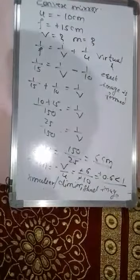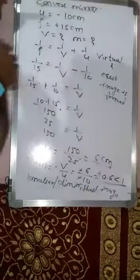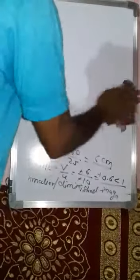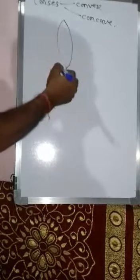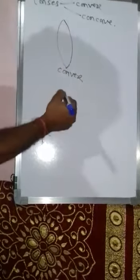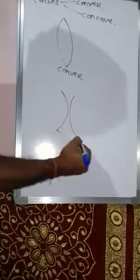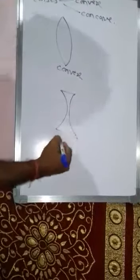In this way we can find numericals for concave and convex mirrors — magnification and image formation. After mirrors, there are spherical lenses. Lenses are of two types: one is convex lens and the second is concave lens. If the lens is outward bulging on both sides, that is a double convex lens or convex lens. If both sides have inward curvature, then it is a concave lens.